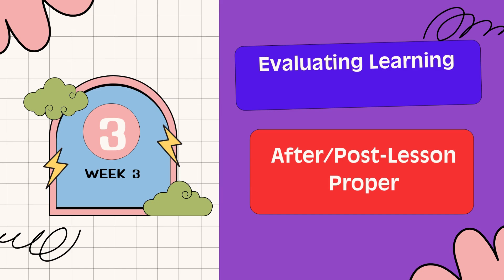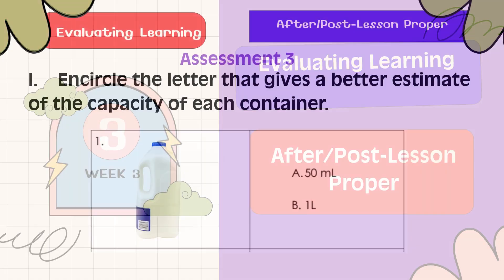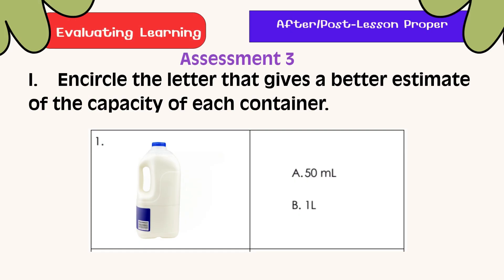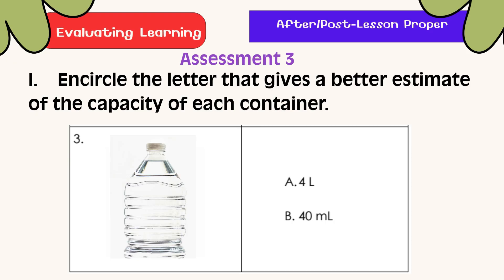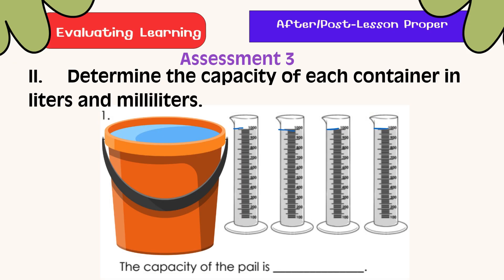Evaluating Learning. Circle the letter that gives the better estimate of the capacity of each container. For Part 2, determine the capacity of each container in liters and milliliters. Here are the possible answers.